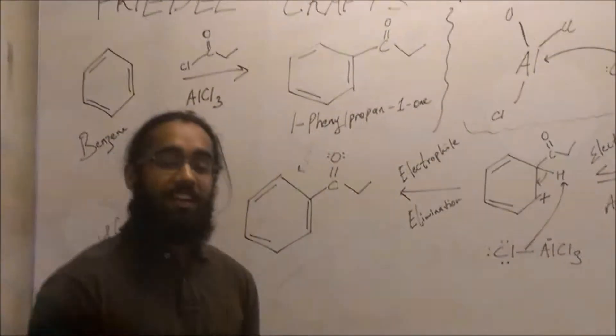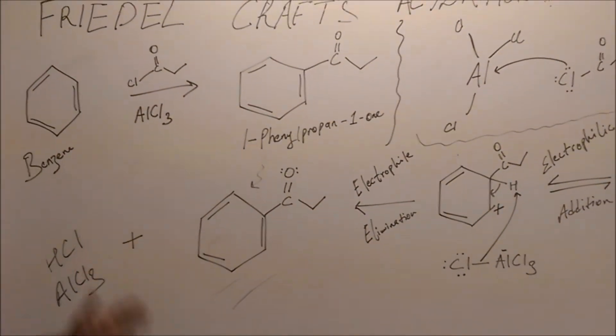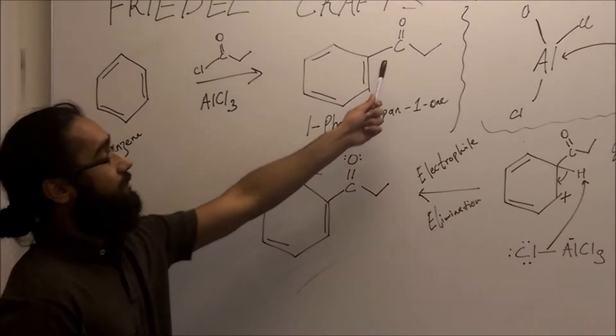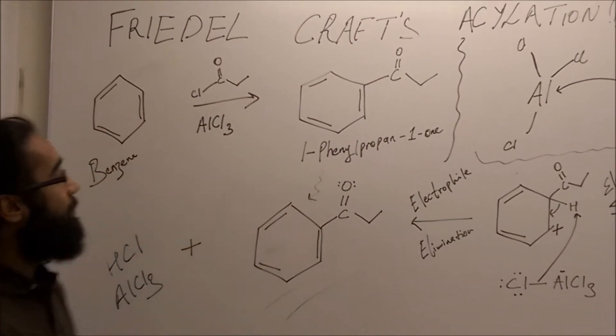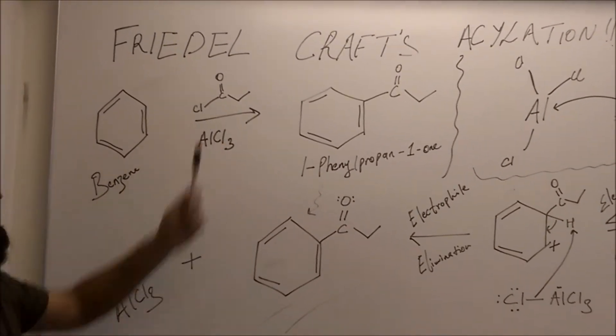So now what we're going to talk about is Friedel-Crafts Acylation. Nothing different from Alkylation. We're using the same compound, starting off with benzene, making a ketone group to be attached on the benzene, which is 1-phenyl-propan-1-one. We're doing this using a Lewis acid and an acid chloride.